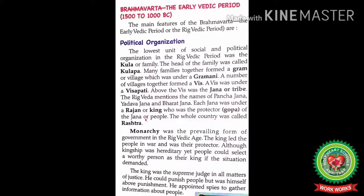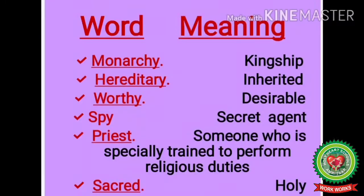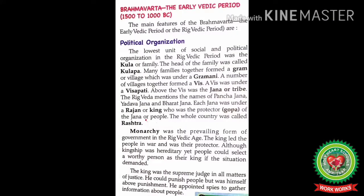Although kingship was hereditary, people could still select a worthy person as their king if the situation demanded. Hereditary means inherited; worthy means desirable. Hereditary kingship meant that after the death of a king, the throne would be succeeded by his son, and in the absence of a son, any other relative or member of the king's family would be the next king. Despite hereditary kingship, people had the right to choose a capable king according to the situation.